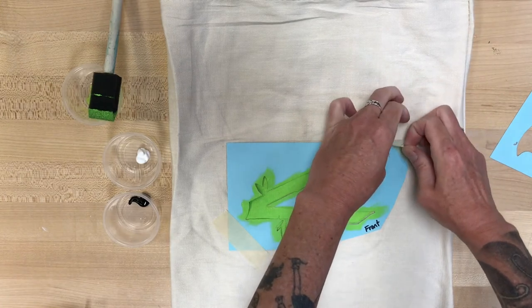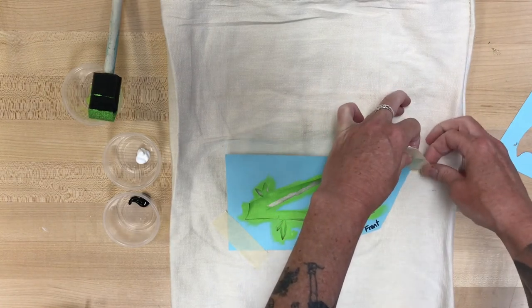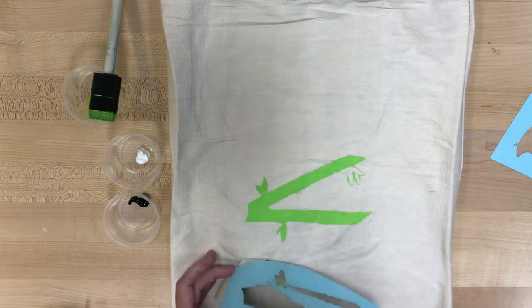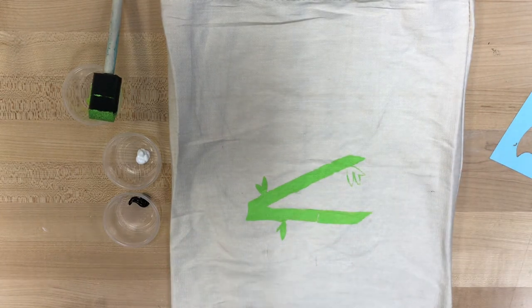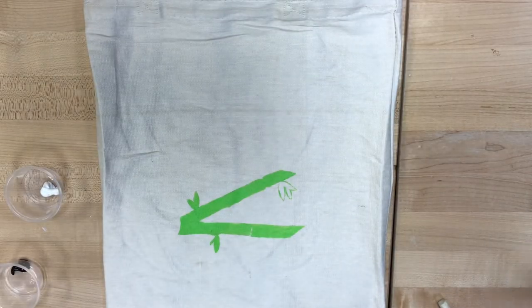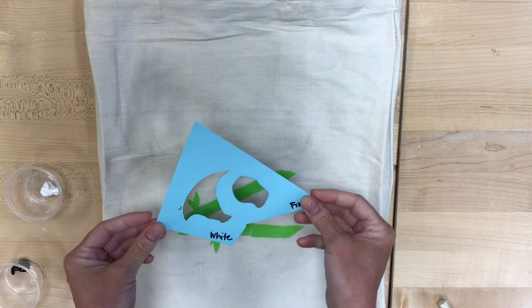And once you've finished with your first color, we're gonna peel up the tape and then lift that stencil right off. And that should leave you behind an image, and you want to make sure that you let that dry completely before we move in for the second stencil.